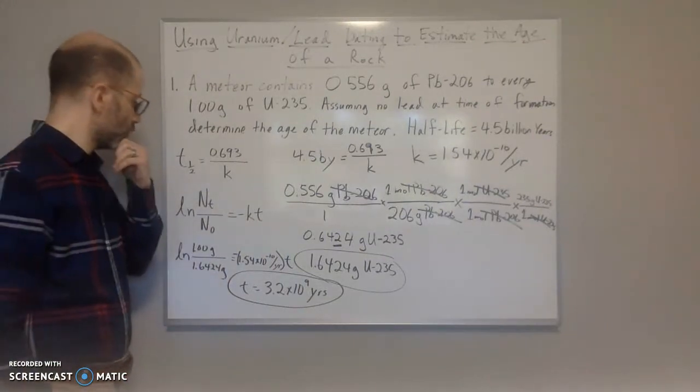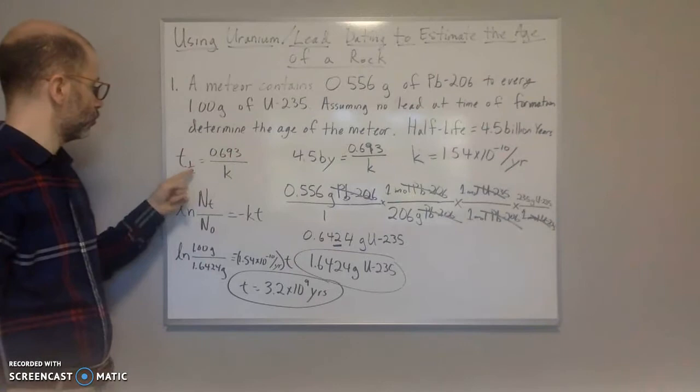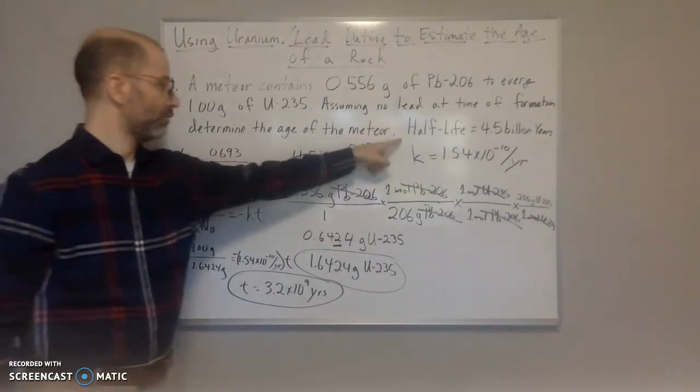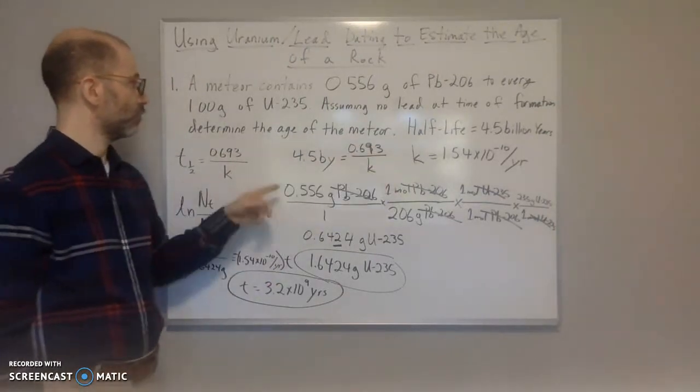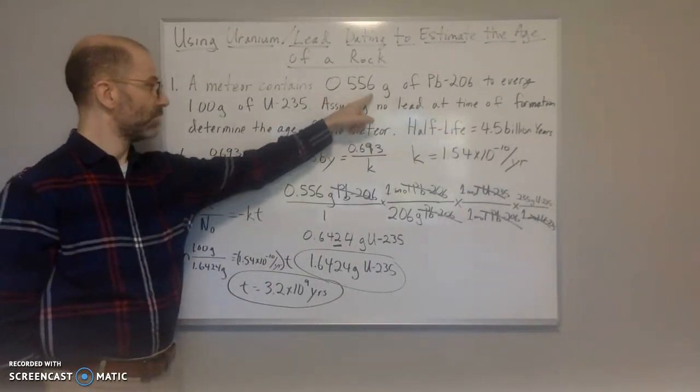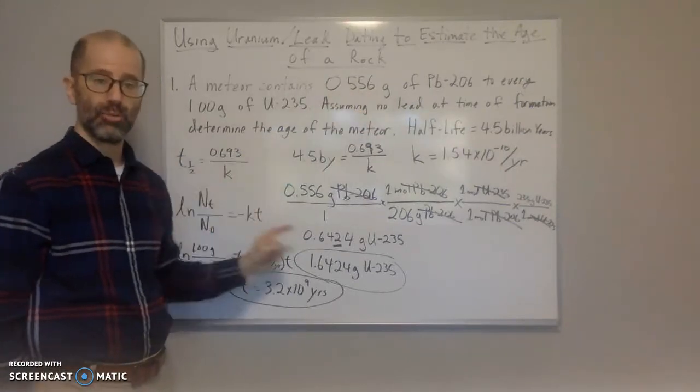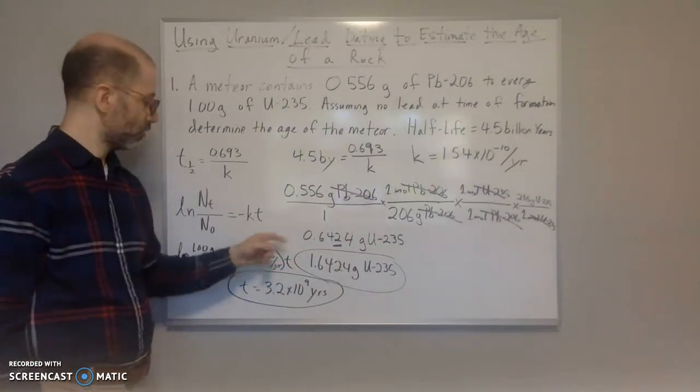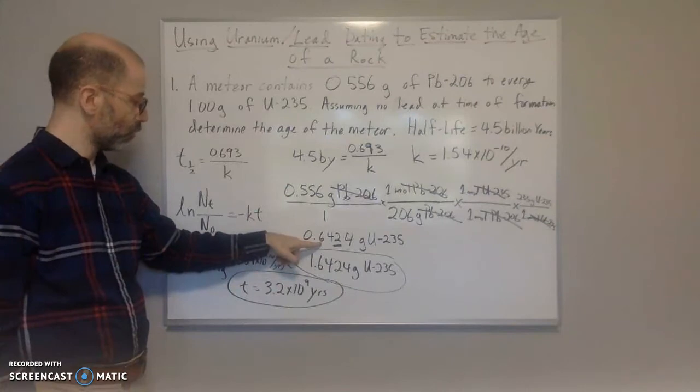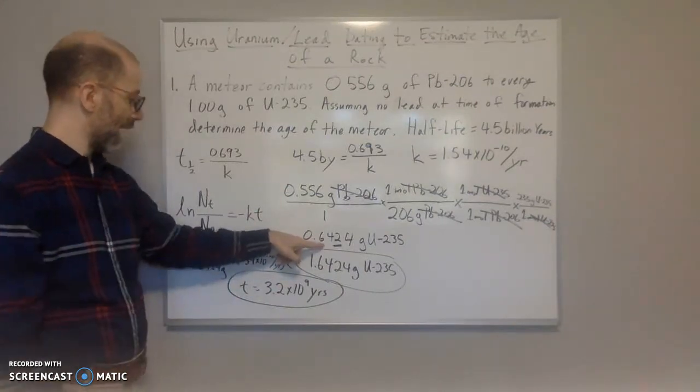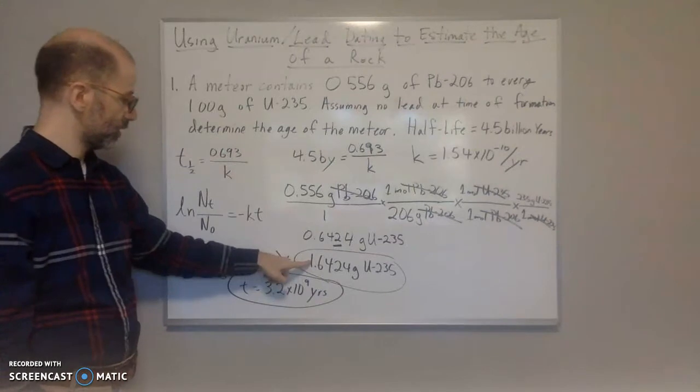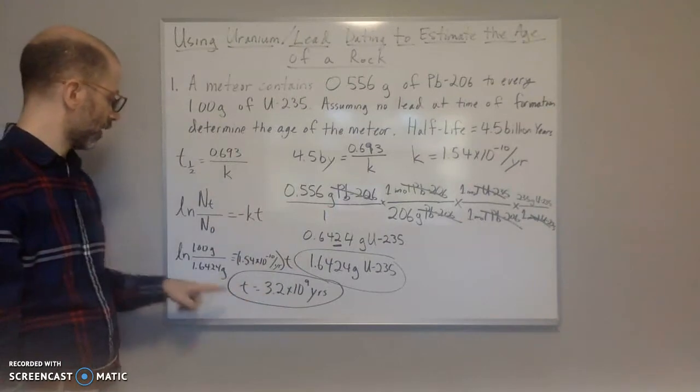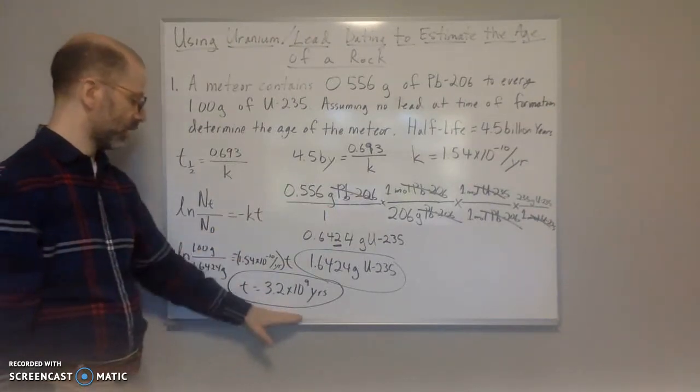So I hope that was helpful. Again, we had to solve for the rate constant k first, putting in the half-life. So we got k and then we had to convert 0.556 grams of our lead that we got back to uranium so that we could get the original amount of uranium that we started with. So this was the amount of uranium that was decayed. We added that to the 1 gram to get this. And now we have the ratio of the 1 to 1.6424 grams here. And we plug everything in and we got the age.